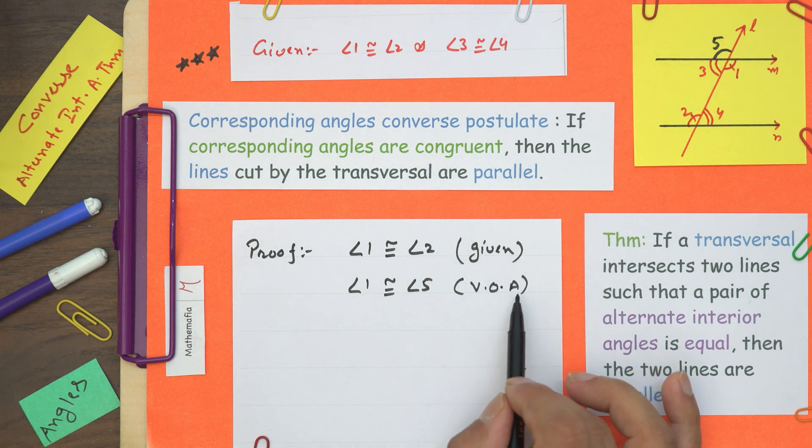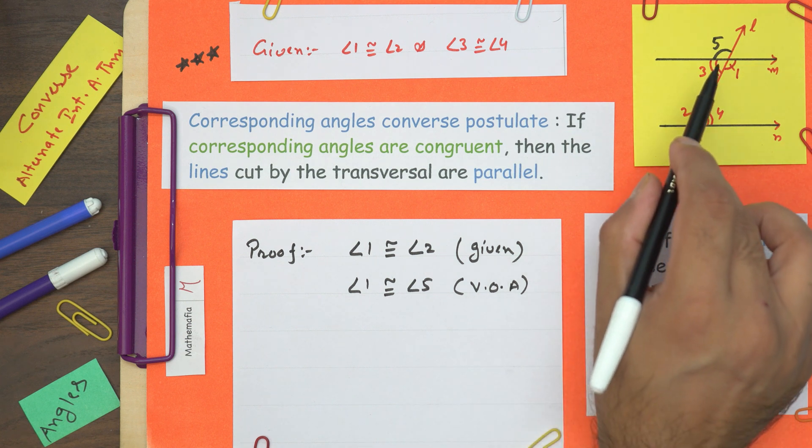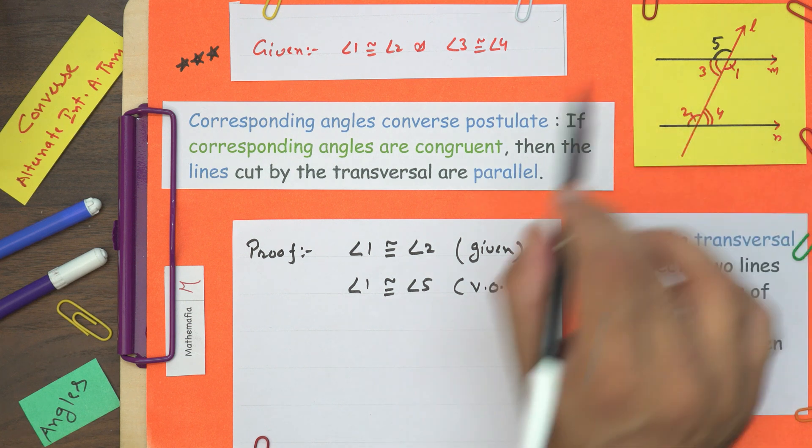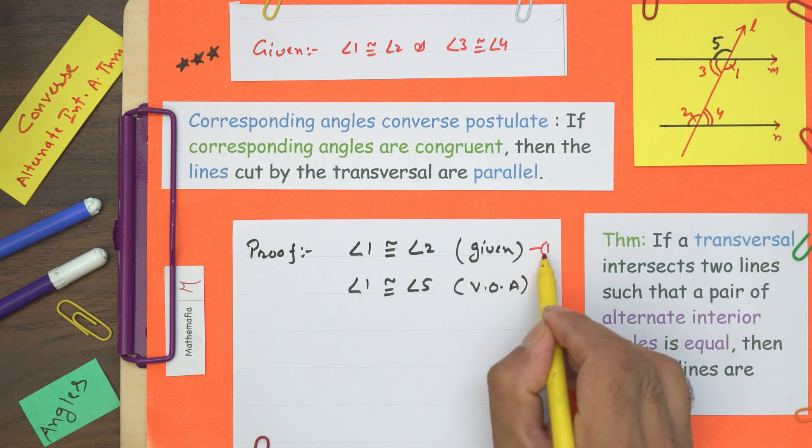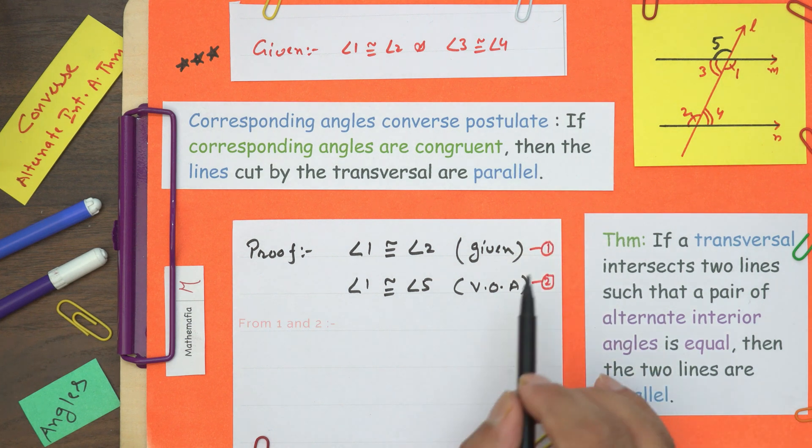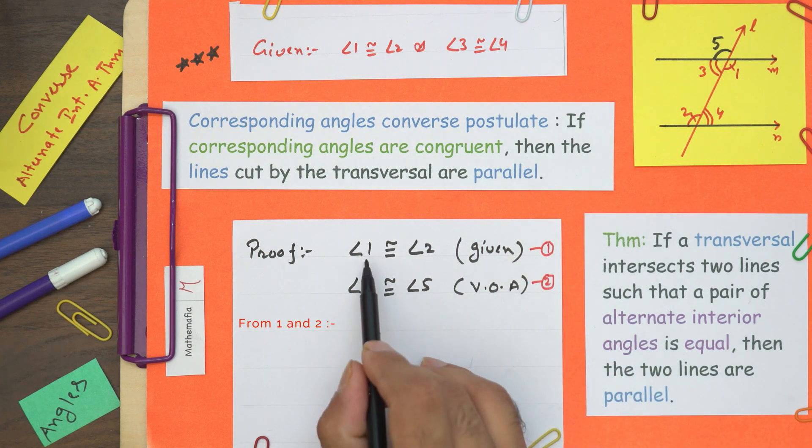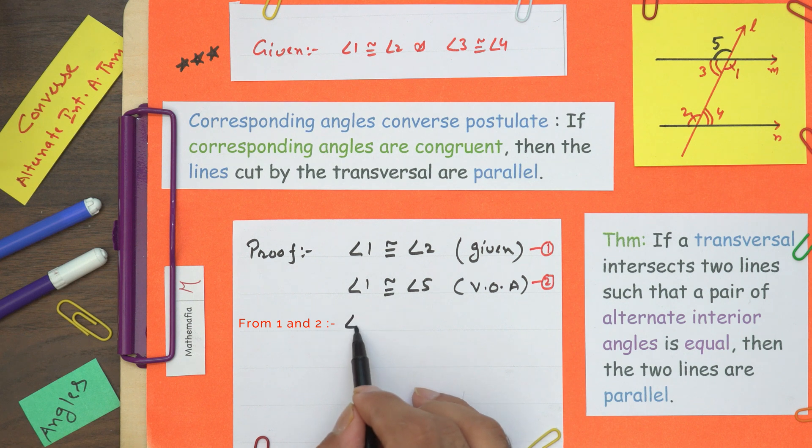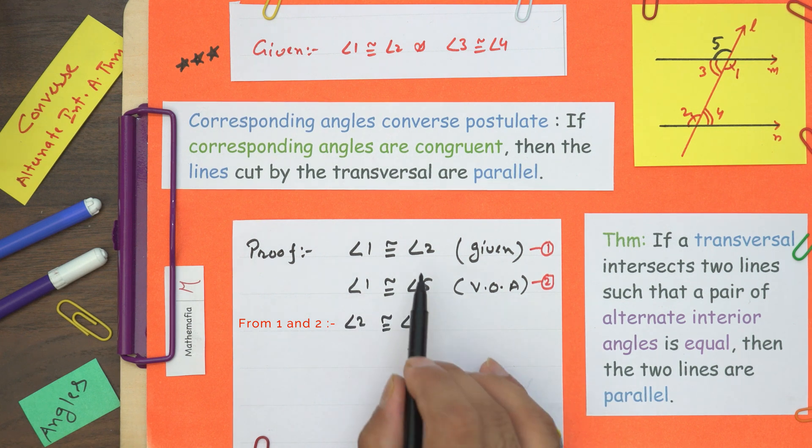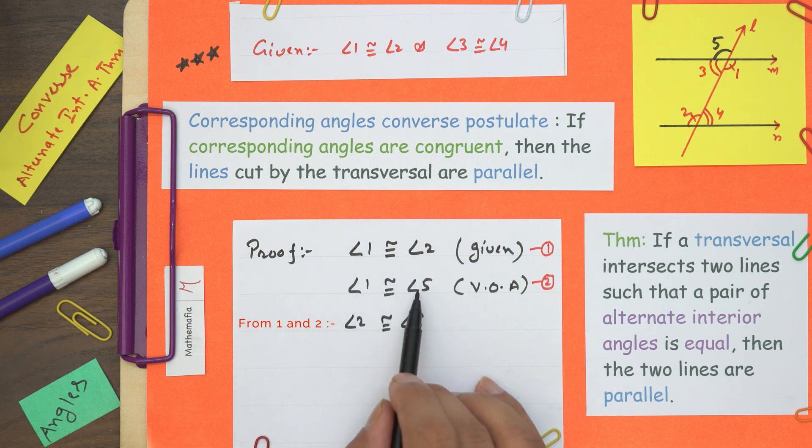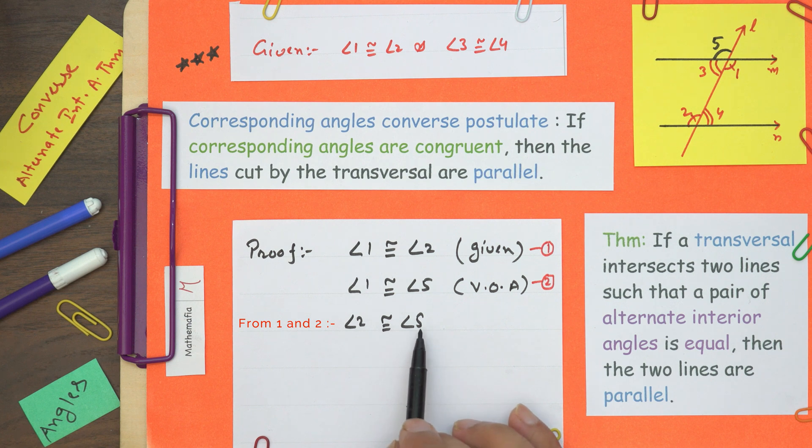Vertically opposite angles are always congruent. If you want to see the proof, the link is in the top right corner. Let's call this statement 1 and this statement 2. Now from 1 and 2, we can say that angle 2 is congruent to angle 5. Both are congruent to angle 1, so these two are congruent to each other.